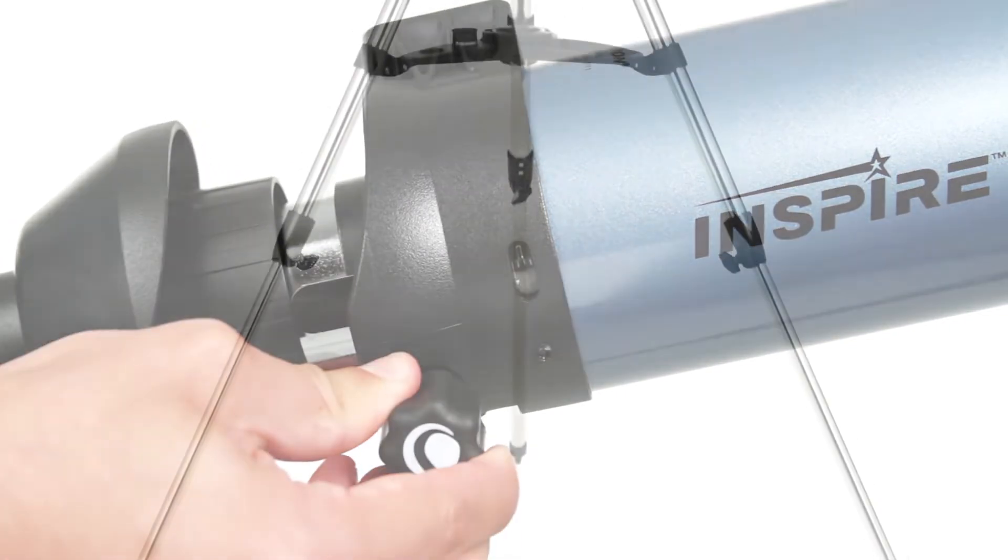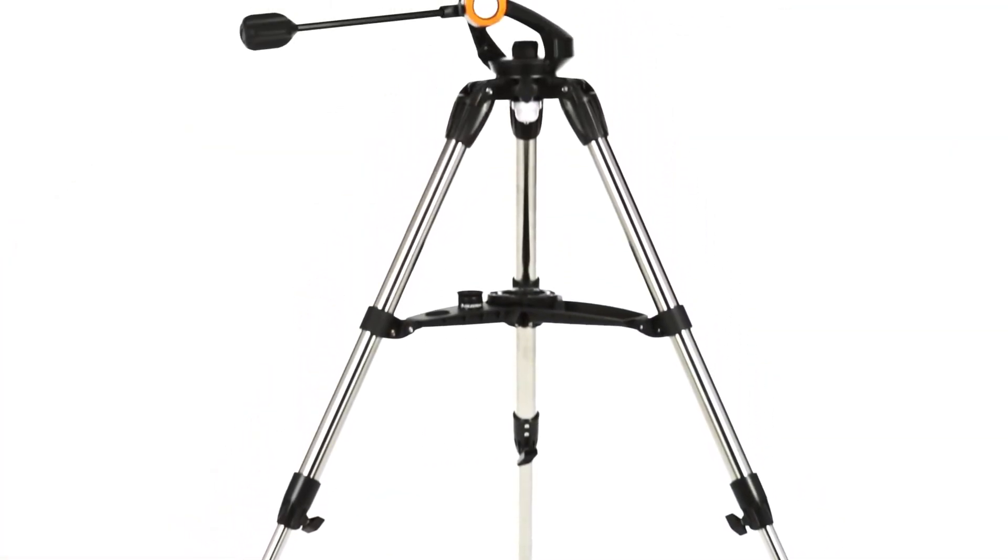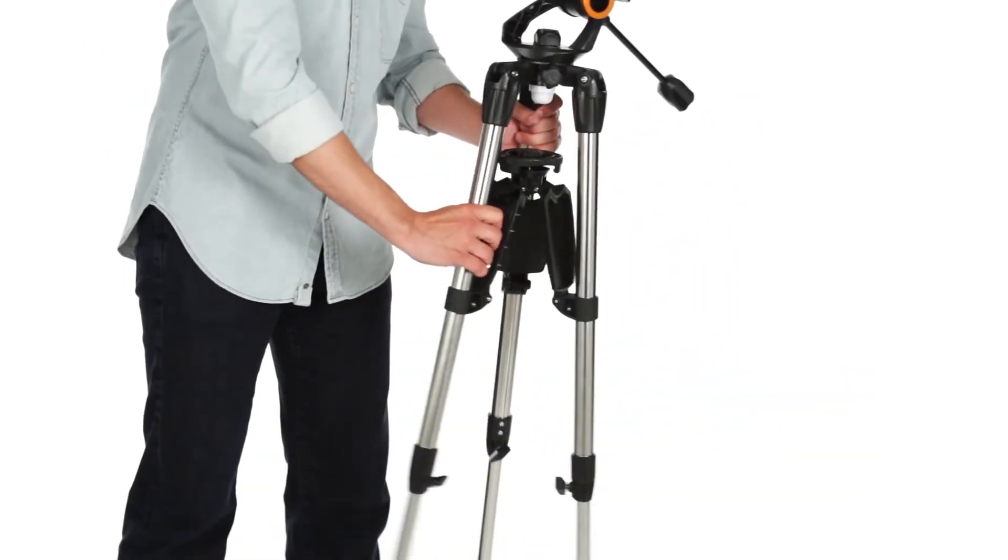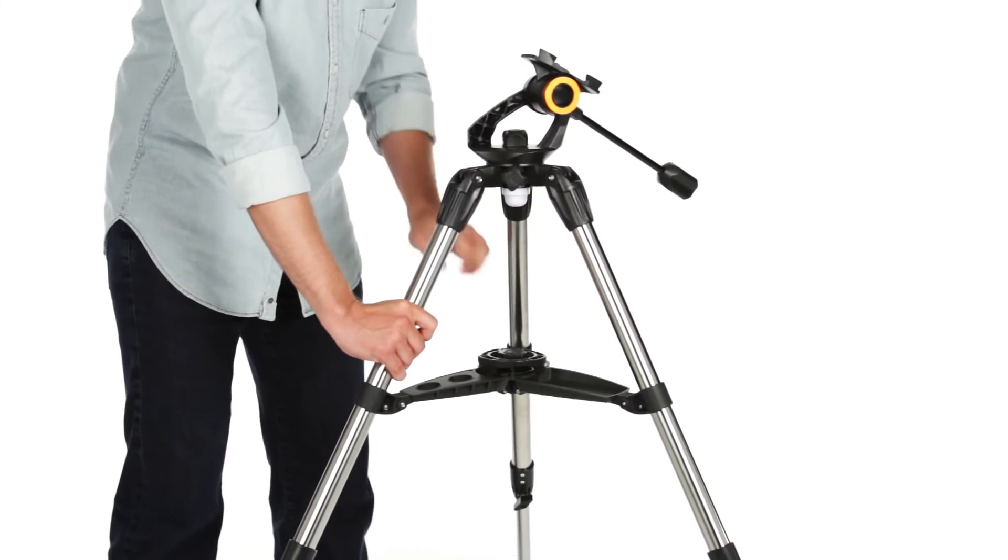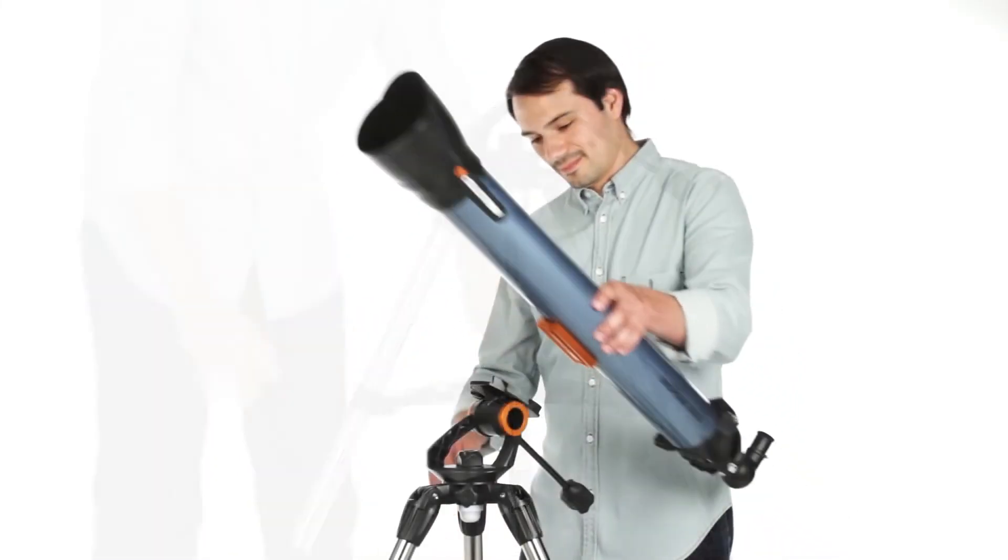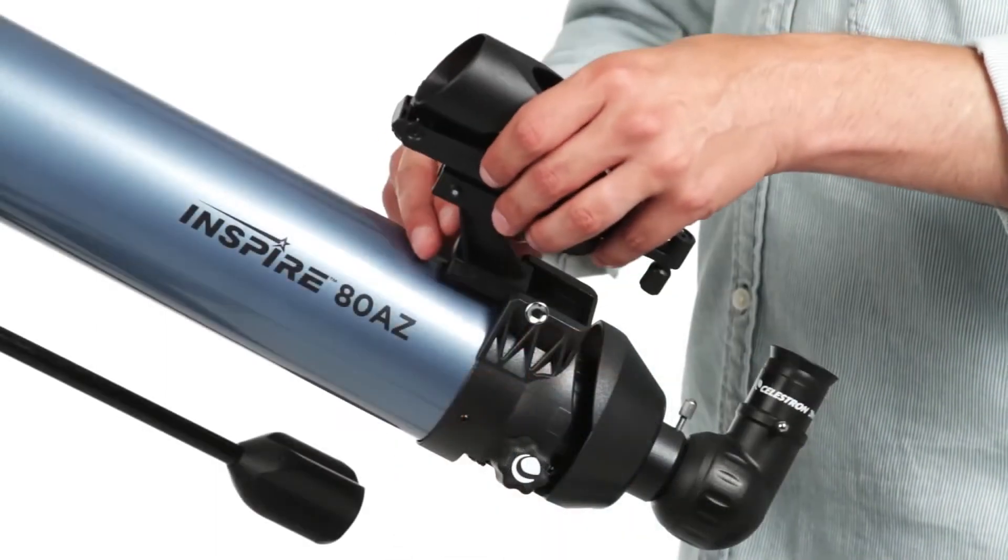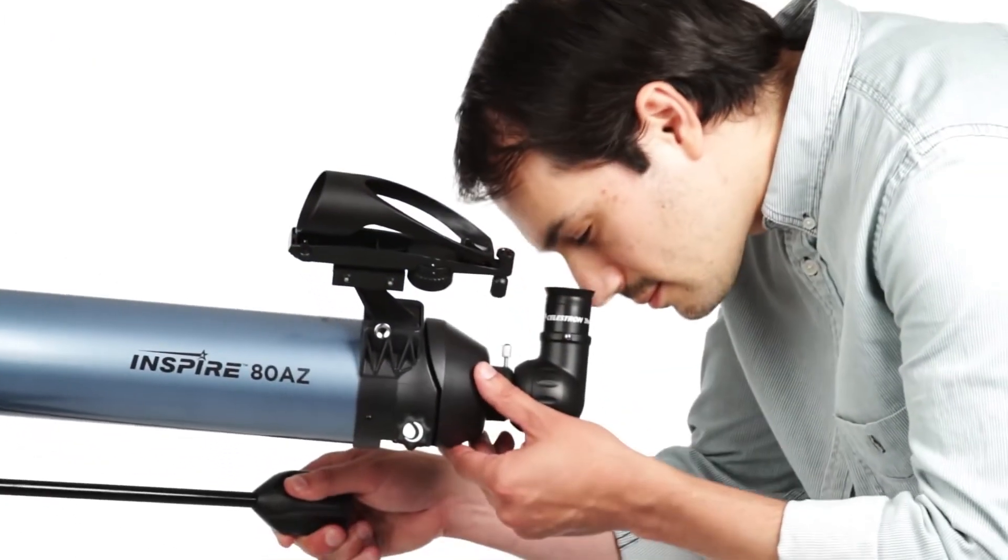Easy to transport and stow, Inspire telescopes feature the simplest setup of any telescope in its class. With the folding accessory tray, you just pop the tripod legs open and turn the lock knob. Then slide the telescope tube into the quick-release dovetail mount, affix the finder scope, and you're observing within minutes.